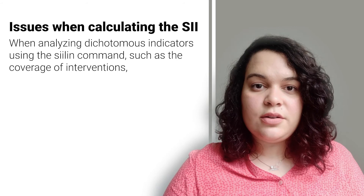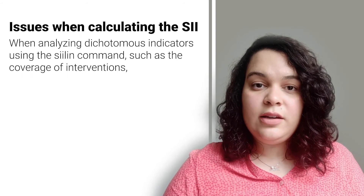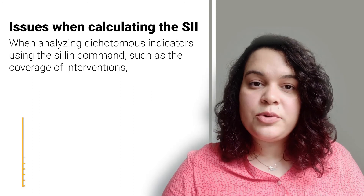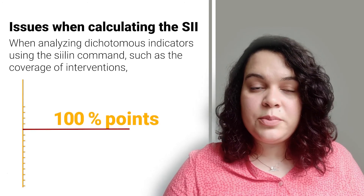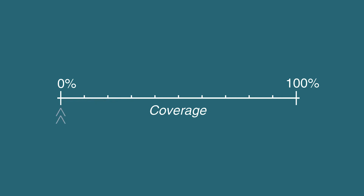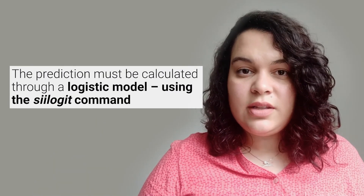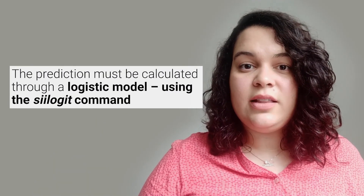Some issues may occur when calculating the SII. When analyzing dichotomous indicators using the SII-LIN command, such as coverage of interventions, linear predictions may exceed 100 percentage points — especially when the first and last groups present extreme values, meaning coverages close to 0 or 100. To avoid this issue, the prediction must be calculated through a logistic model using the SIIlogit command.